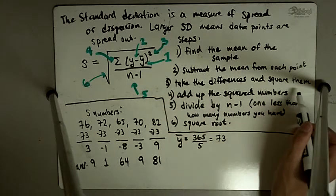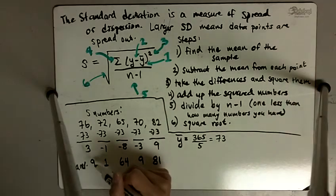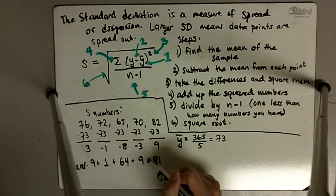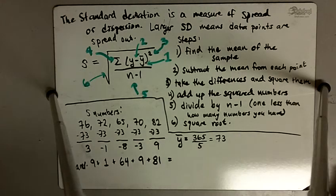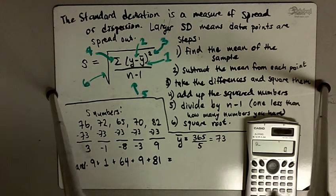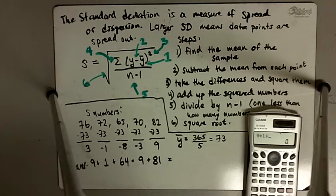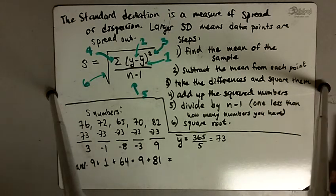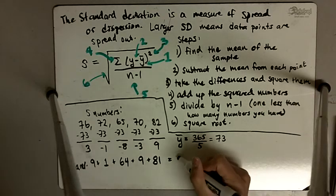After we've taken the differences and squared them, we add up those squared numbers. So I'm going to do 9 plus 1 plus 64 plus 9 plus 81. And that gives me a sum of 164.